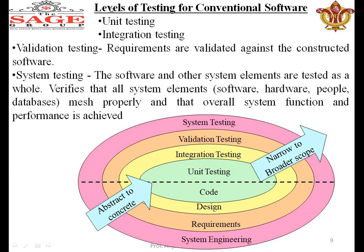Now we will see the levels of testing. There are four levels of testing as shown in the diagram. Unit testing — as the name suggests, each and every unit of code should be tested; it is also called code testing. Integration testing means joining the small modules that were unit tested; this is also known as design testing since according to the design we test the whole. Validation testing verifies the customer requirements are met. System testing means all software, hardware, people, database — all overall functions should work properly. These are the four levels of testing.